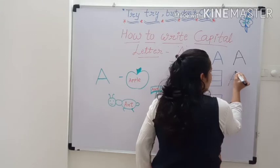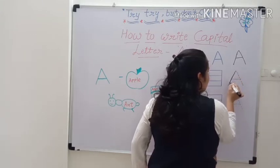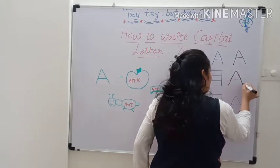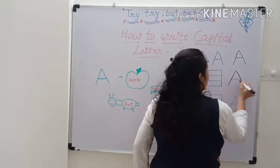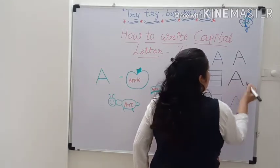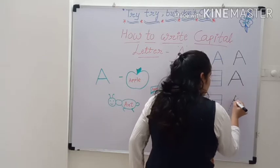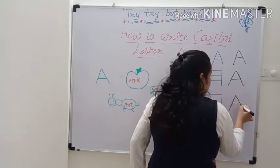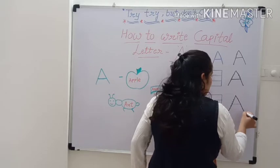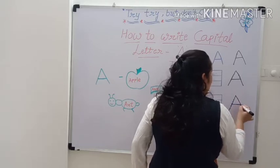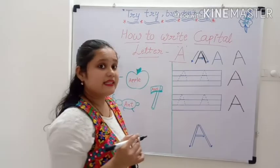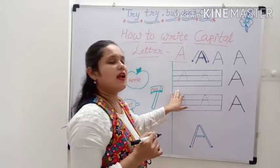Join the dots and make A. Join the dots. Capital A. Join the dots and make A. This is capital A. Now let's see how to write in full line.